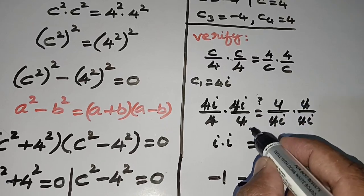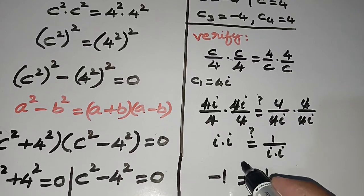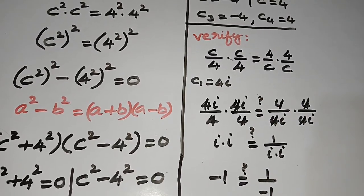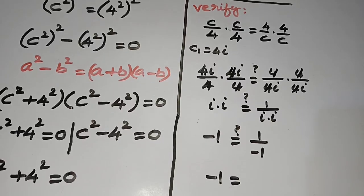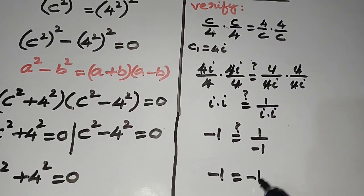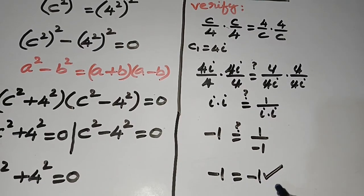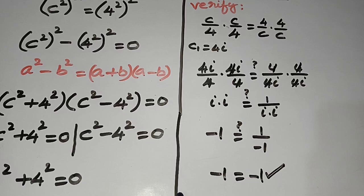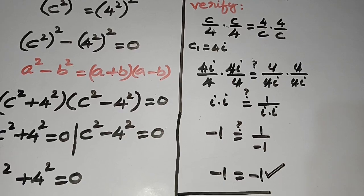We are checking whether both sides are equal. We have -1 on the left, and 1/(-1) = -1 on the right. So -1 = -1. This is true — we have verified it.